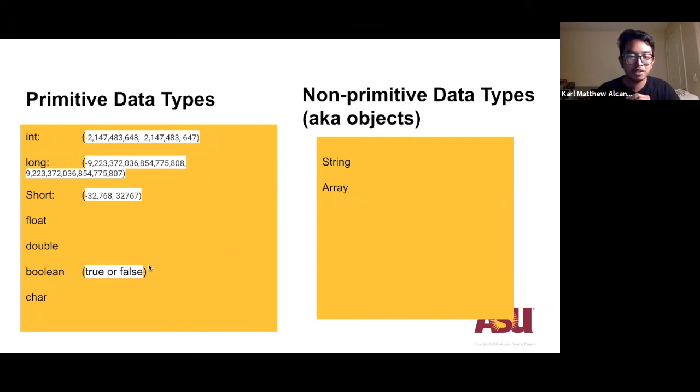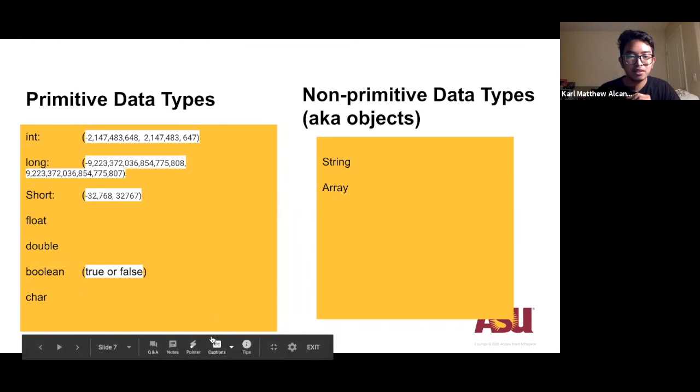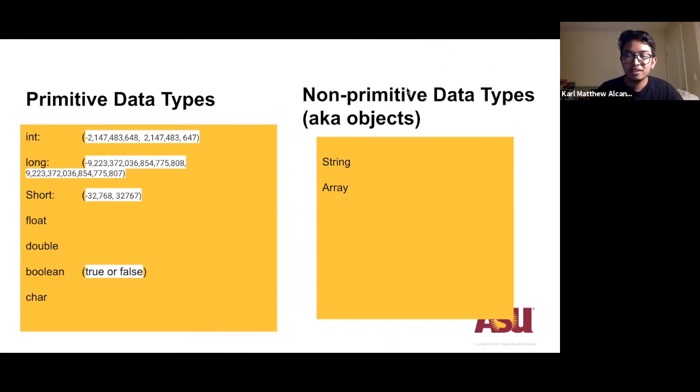And continuing on, we have the non-primitive data types. This includes strings and arrays. This is mostly what you will be using in your course. String can store a series of characters, and an array is a data structure.